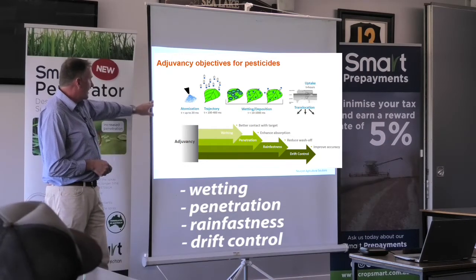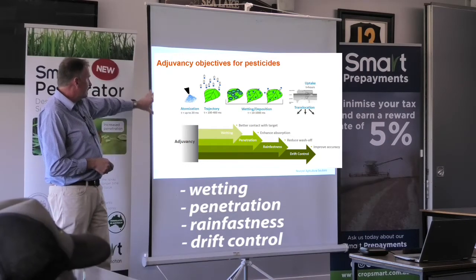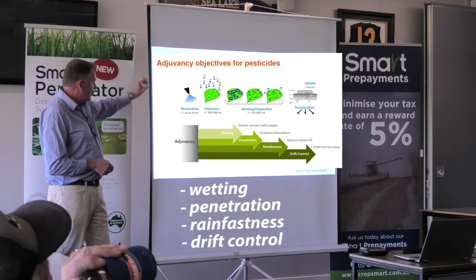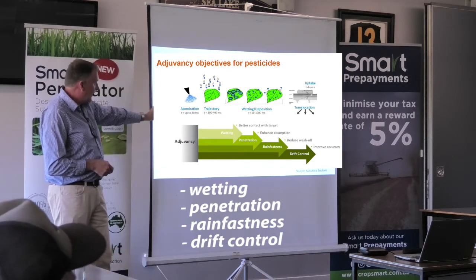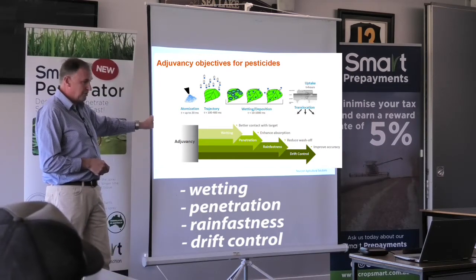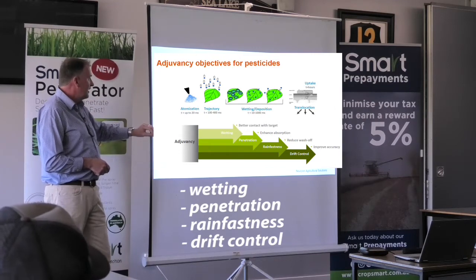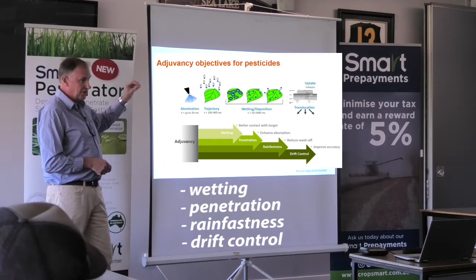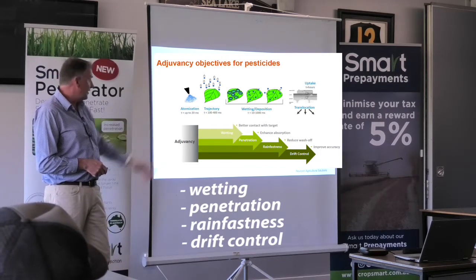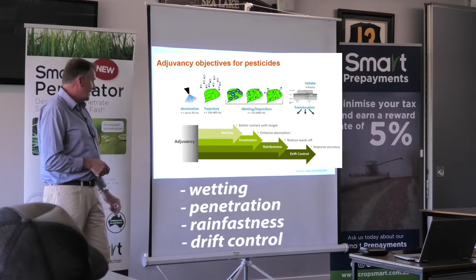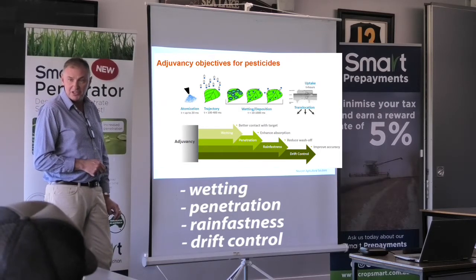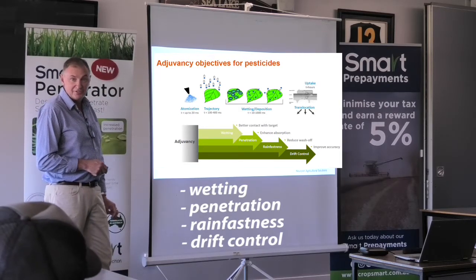So we're trying to control basically the droplets and how they're actually forming out of the nozzle. We're then trying to control how they sit on the leaf, how they stay on the leaf, how long they stay on the leaf. And we're then trying to control how the glyphosate then penetrates into the leaf. So there's a fair bit going on in what sounds like a simple subject.